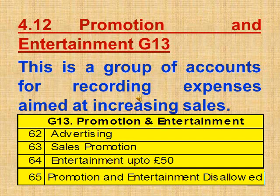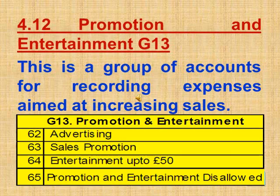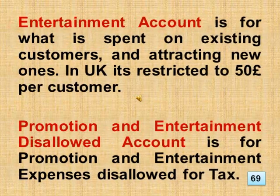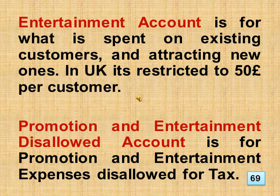Section 4.12 Promotion and Entertainment, Group 13. This is a group of accounts for recording expenses aimed at increasing sales. This includes advertising, sales promotion, entertainment up to £50, plus promotion and entertainment disallowed. Advertising account covers advertisement on radio, television, newspapers, and others. Sales promotion account covers the cost of free samples, exhibitions, etc. Entertainment account covers what is spent on existing customers and attracting new ones — in the UK it's restricted to £50 per customer. Promotion and entertainment disallowed account covers promotion and entertainment expenses disallowed for tax.